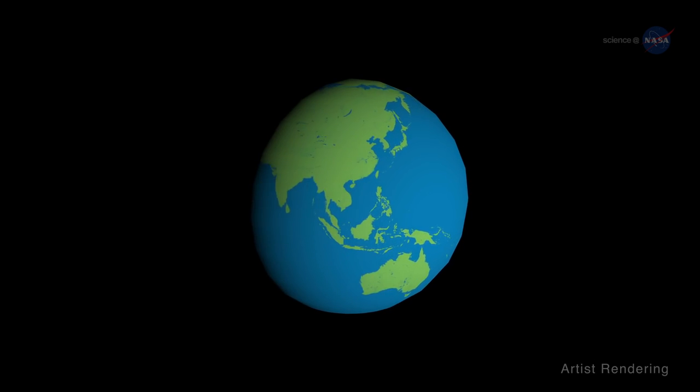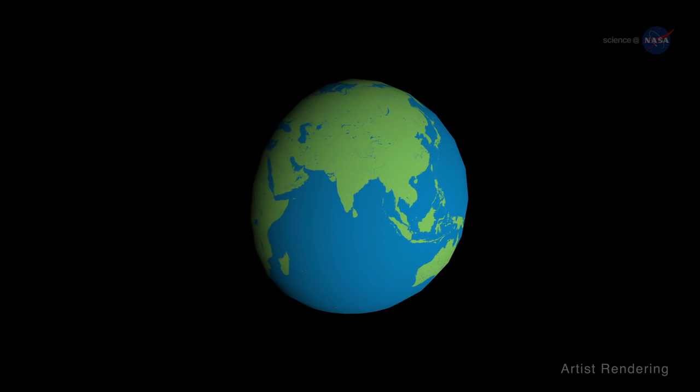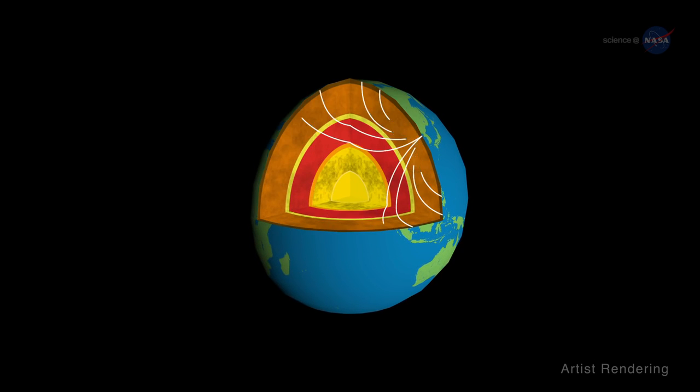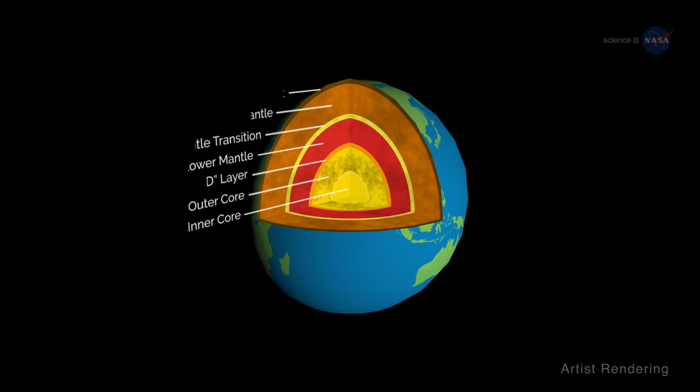Astro-seismology is akin to the science of seismology. Earthquakes send waves rippling through the body of Earth. By analyzing those waves, seismologists can figure out the interior structure of our planet.